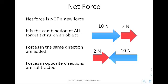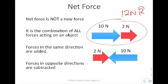Next: net force. Net force is not a new force — instead, it's a combination of all the forces acting on an object. Whenever we say net force, it's not like gravitational force or normal force; it is a combination of those forces to produce the total force. Forces in the same direction are added, so two rightward forces would give a net force of 12 newtons right. Forces in opposite directions are subtracted, giving 8 newtons to the left.